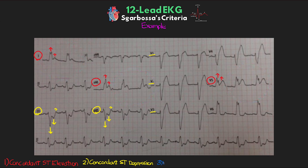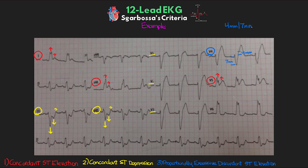Finally, we look for disproportionately large ST elevation when comparing that to the amplitude of a negative S-wave. Let's look at V4 — hopefully this one really stands out. If we measure our S-wave, it's about 7 millimeters deep. Looking at our ST elevation, if we estimate our J-point to be right about here, we have about 4 millimeters of height. So if we divide our ST elevation of 4 by our S-wave amplitude of 7, we get 57%, which is way above our criteria of greater than or equal to 25% in at least any one lead. At this point, we can say that this patient is having a STEMI.